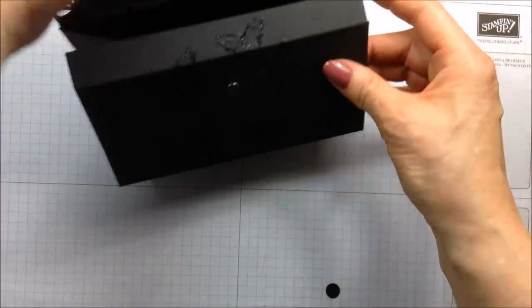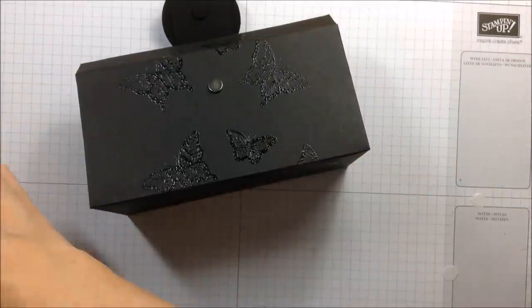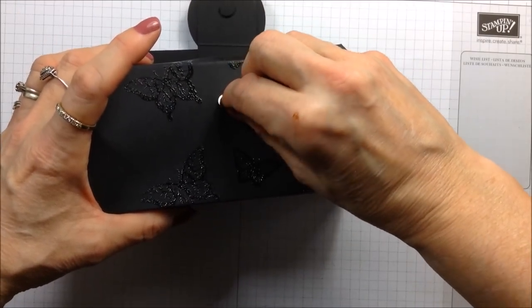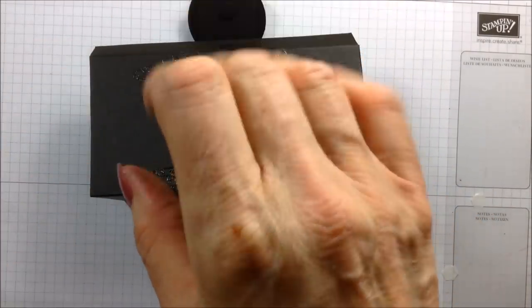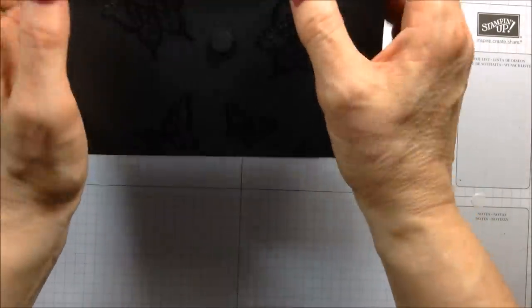I'm just going to finish off by taking my other little circle, put a glue dot on the back of that, and I'm just going to cover that up. So there we go, that's that.